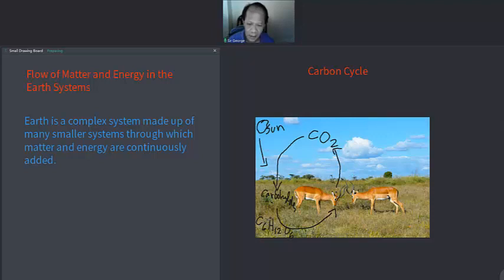The animals, we can consider that they belong to the biosphere, and carbon is emitted into the atmosphere here in the air. Then it is taken again by plants which belong to the biosphere. So there is a flow of matter from one system to another.